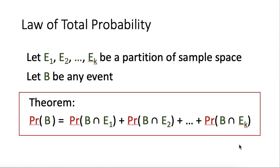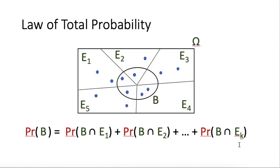To prove this, it is very easy. We can look at the Venn diagram. In this example, we have events E1, E2, E3, E4, and E5, and they form a partition of the sample space. In the middle part, we have event B. The probability of B will be all the probabilities of outcomes within the region of B. Each region is in the intersection of B with one of the Ei's, and so the theorem follows from the diagram.